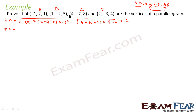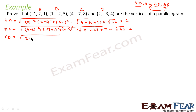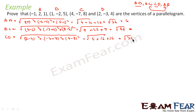Similarly, let's find BC. BC is root of (4 minus 1)² plus (minus 7 plus 2)² plus (8 minus 5)², which is root of 9 plus 25 plus 9, equal to root of 45. Now we will find CD: root of (2 minus 4)² plus (minus 3 plus 7)² plus (4 minus 8)², which is root of 4 plus 16 plus 16, equal to root of 36, which is 6.